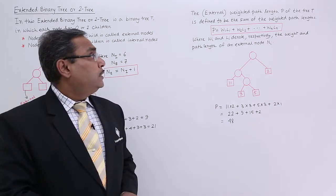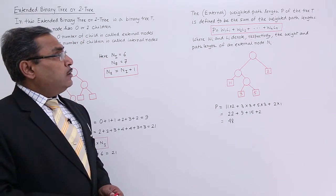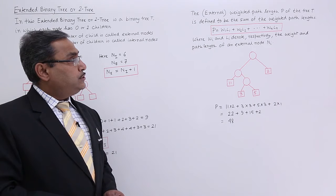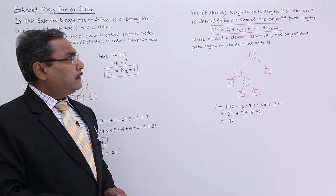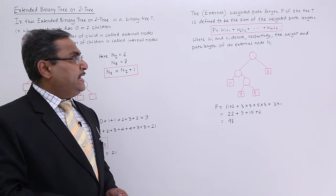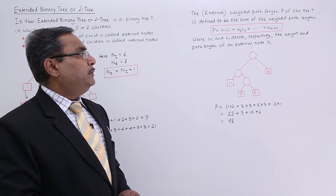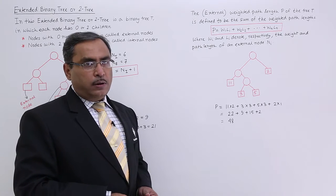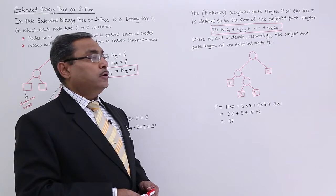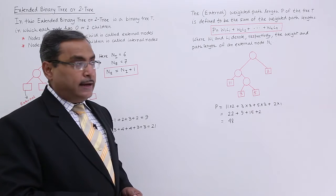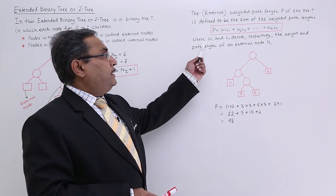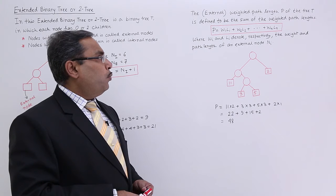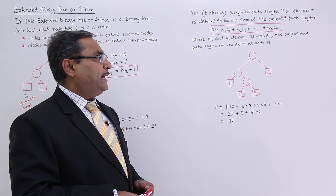Now next, the external weighted path length. So here you will be having the weightage. External weighted path length P of the tree T is defined to be the sum of the weighted path length: P is equal to W1L1 plus W2L2 plus dot dot dot WNLN.